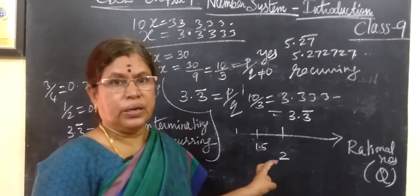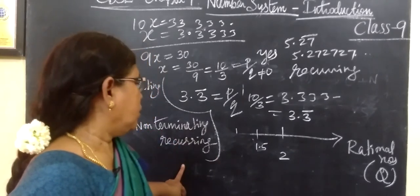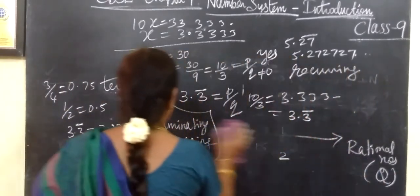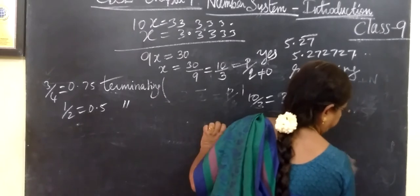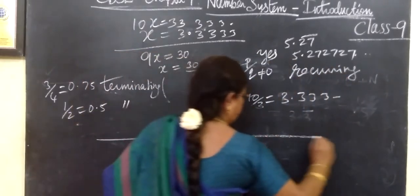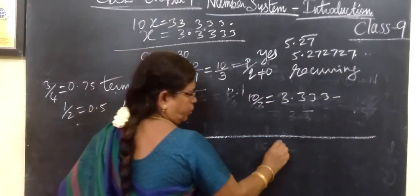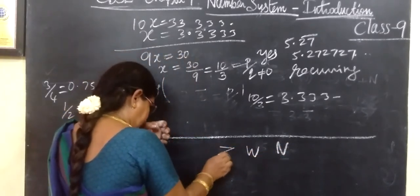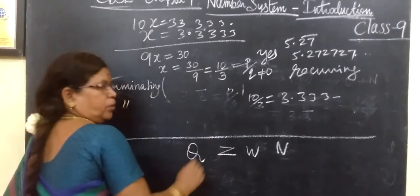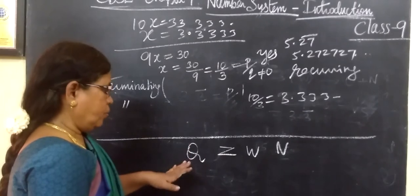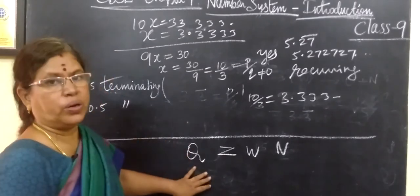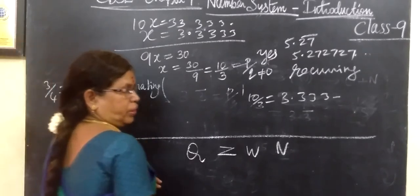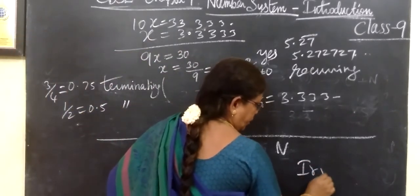So on this number line, first we talk about natural numbers, then whole numbers, then integers, then Q — rational numbers. Now, apart from all these numbers, we have some more numbers, for which we give the name irrational numbers.